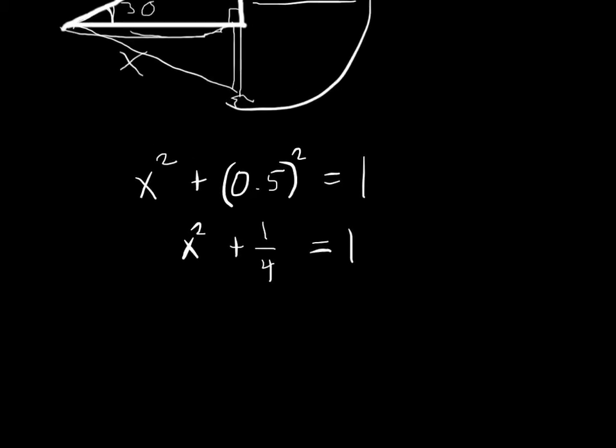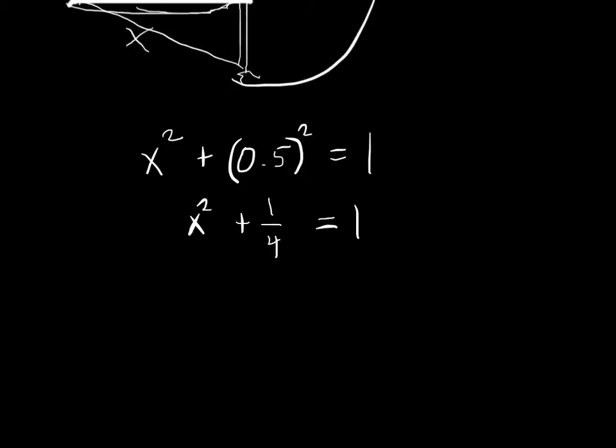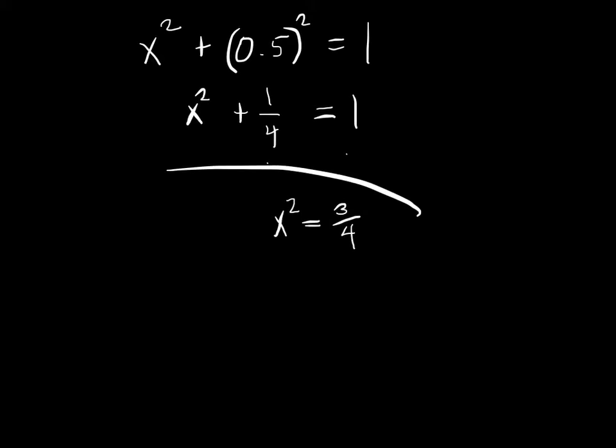Okay. What's next? We're solving for x, right? So I've got to get x by itself. Minus 1 fourth, minus 1 fourth. So x squared equals three fourths. Square root time. Ready? The square root of three fourths is really the square root of three over the square root of four. What's x? X is the square root of three over two.